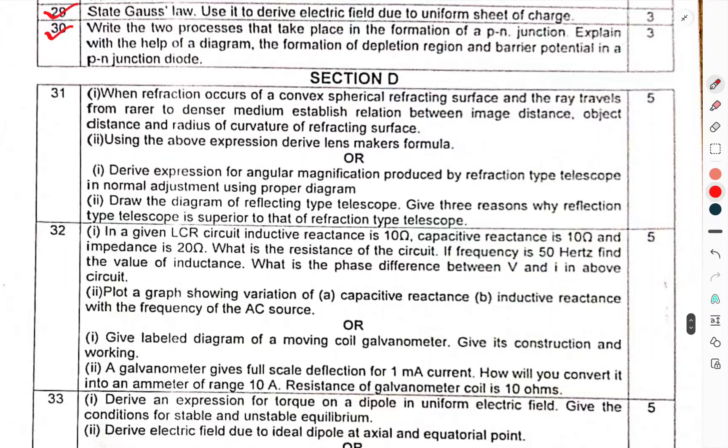Question 31: When refraction occurs at a convex spherical refracting surface and the ray travels from rarer to denser medium, establish the relation between image distance, object distance and radius of curvature of refracting surface. Use the above expression to derive the lens makers formula. Or, derive expression for angular magnification produced by refracting type telescope in normal adjustment using proper diagram. Draw a diagram of reflecting type telescope. Give three reasons why reflecting type telescope is superior to the refracting type telescope.